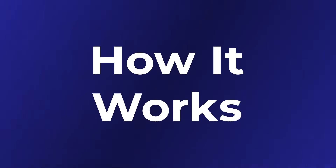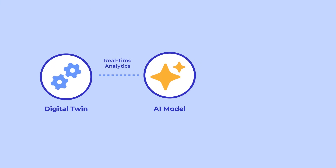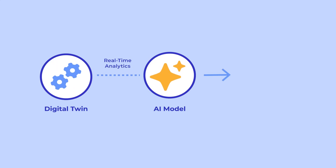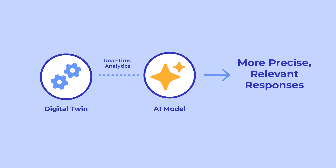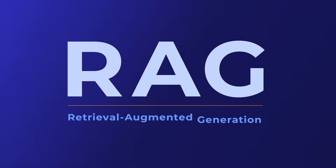Here's how it works. When a digital twin provides real-time analytics results to an AI model, the model uses this data to generate more precise and relevant responses. This process is known as Retrieval Augmented Generation, or RAG.